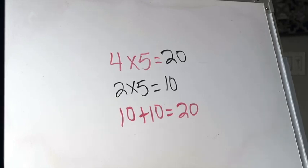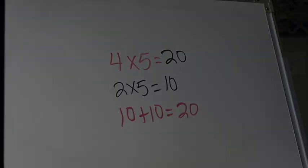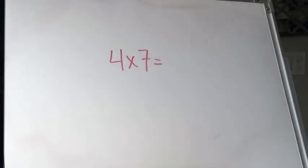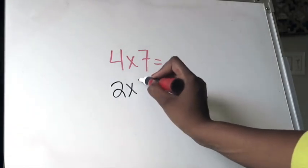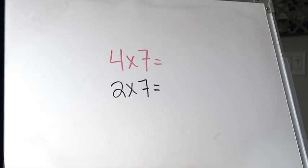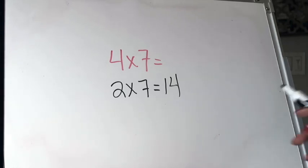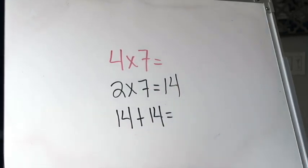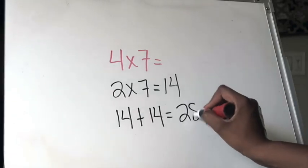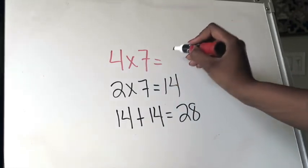Let's do another example using the double strategy with facts of four. In this example, I am multiplying four times seven. I remind myself that four is just two doubled, and I break this problem down to an easier one. Instead of four times seven, I do two times seven. I know two times seven is 14. Since I'm dealing with four times seven and four is the doubled version of two, I double my product: 14 plus 14 equals 28. So the product of four times seven is 28.